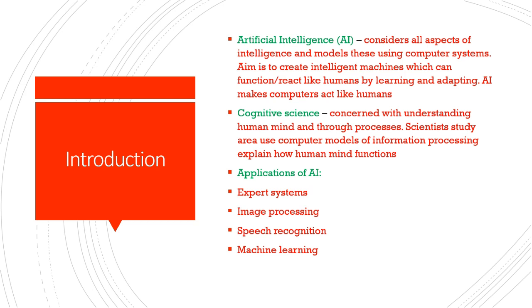A.I. uses a thing called cognitive science, and this is concerned with understanding the human mind through processes. Scientists will study the area using computer models of information, and these processes explain how the human mind functions. There are different applications of A.I. — it can be applied using expert systems, which we'll talk about in a different video, image processing, speech recognition, which we'll talk about in a different video, and machine learning.